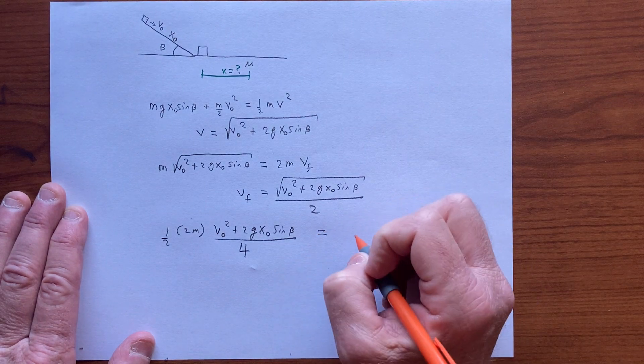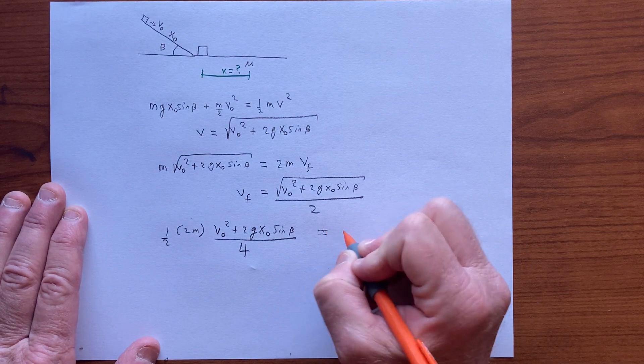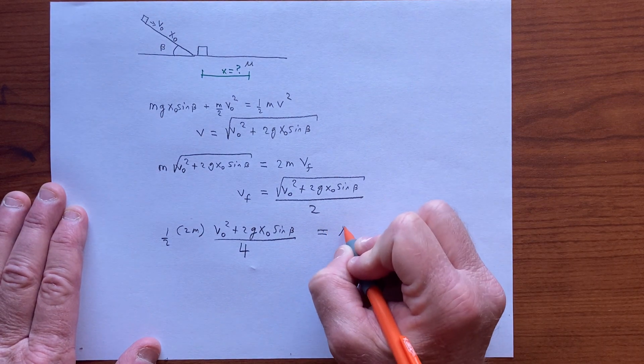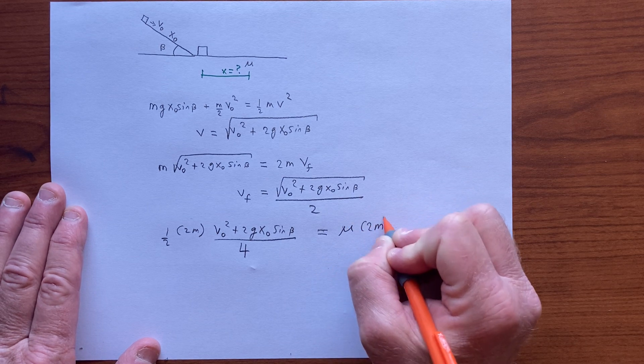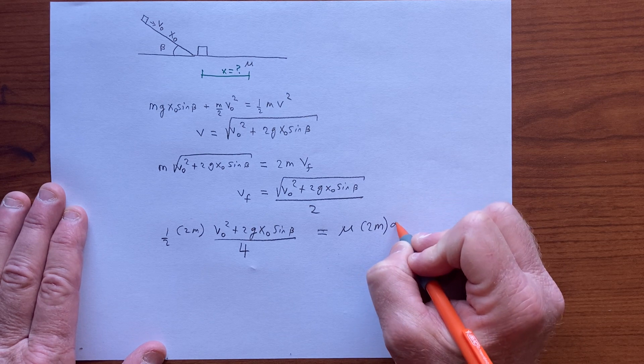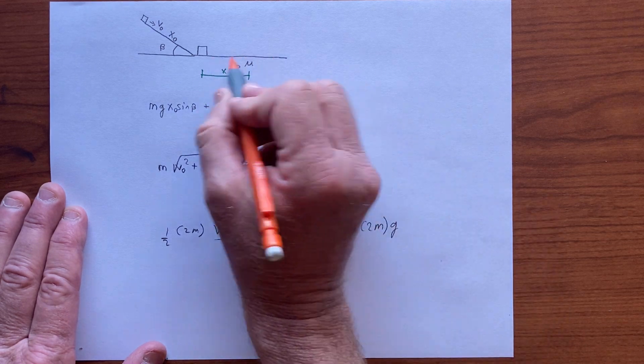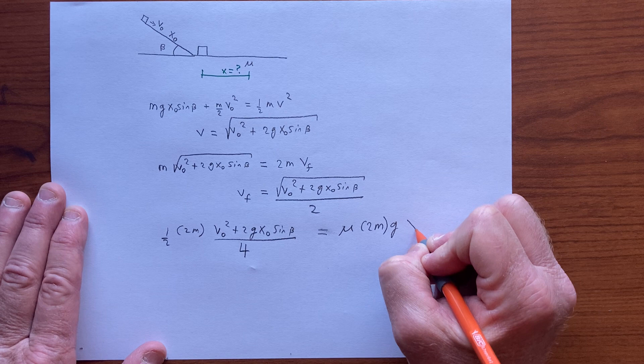But that ends up being the energy that gets dissipated due to friction, so we have coefficient of friction times all the mass, which is 2m, times g. This is the normal force on the horizontal surface times the unknown x.